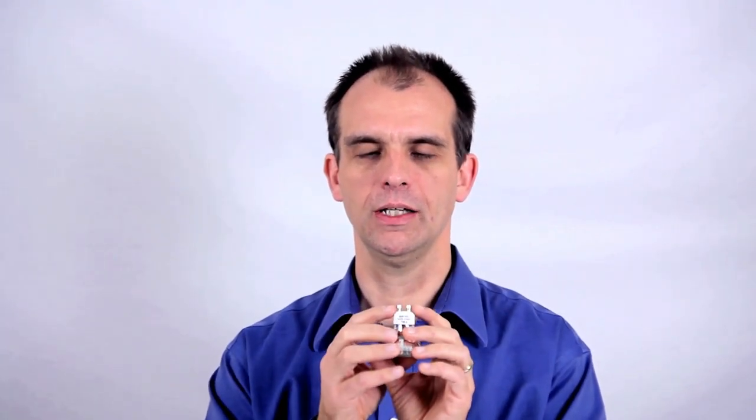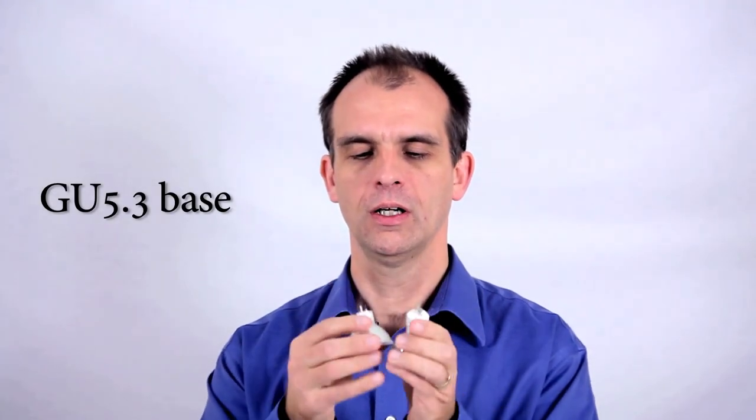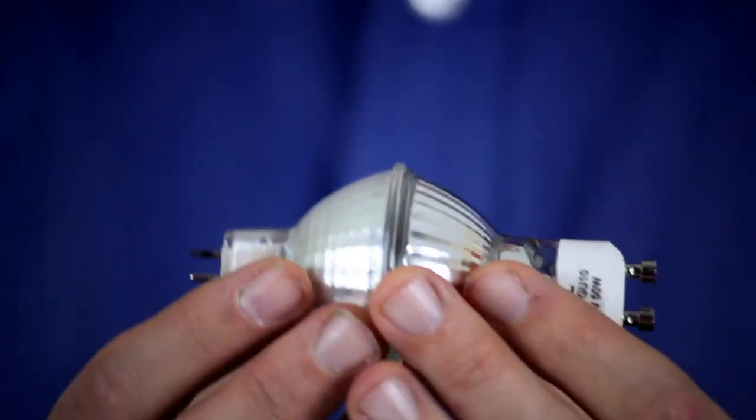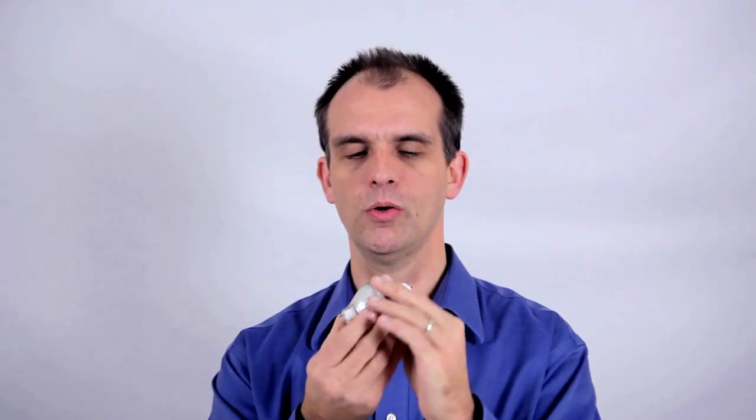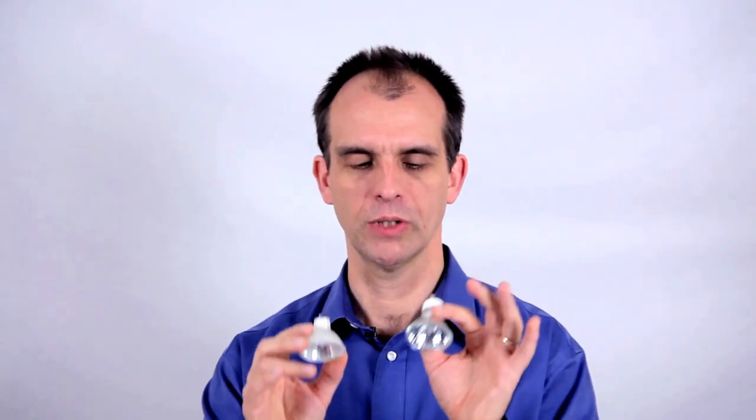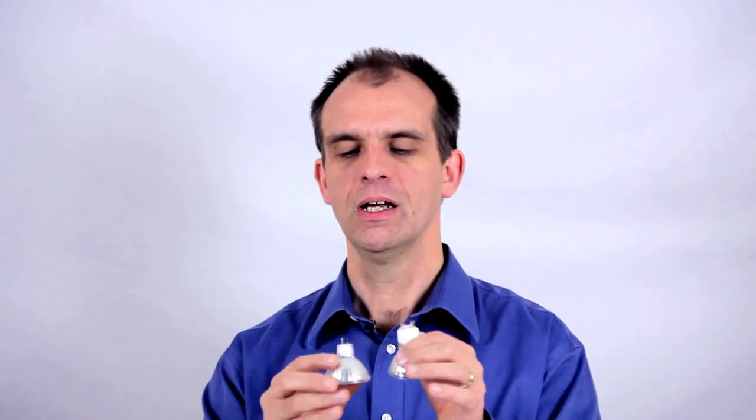These big fat pins indicate that it runs 120 volts and the GU 5.3, which is pretty much the same light on the front, but with two different pins. MR16's both, but this runs 120 volts and this one runs 12 volts. There's a special reason for that, which I won't get into here, but they are not compatible in terms of the voltage.